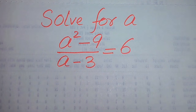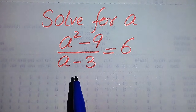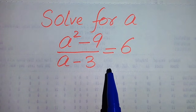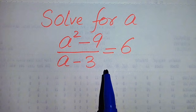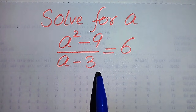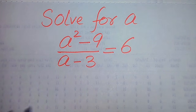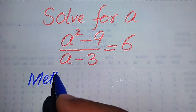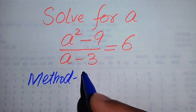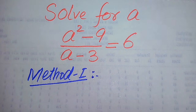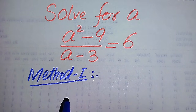Hello everyone. How to solve this problem: for the values of a, if we have a² minus 9 divided by a minus 3 equals 6. We solve this problem for all the values of a. First we find all the roots of this equation, and at the end we verify which roots are solutions and which are extraneous roots. We solve this problem using two methods.